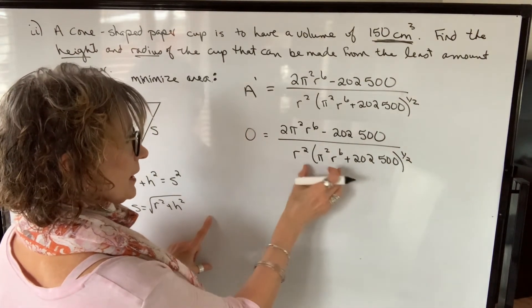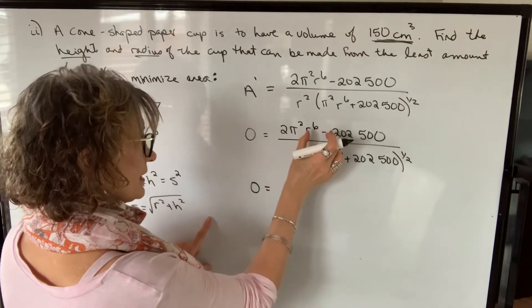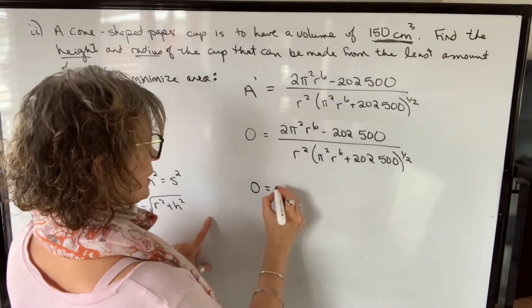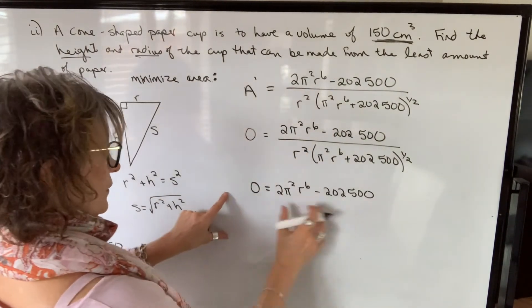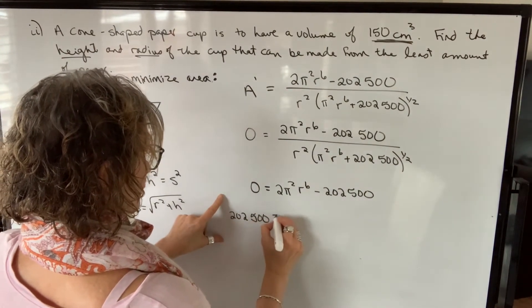So what we're going to do is we're going to eliminate the denominator. You can think of it just as multiplying both sides of the equation by the denominator. So I will only get a solution if this numerator equals zero.